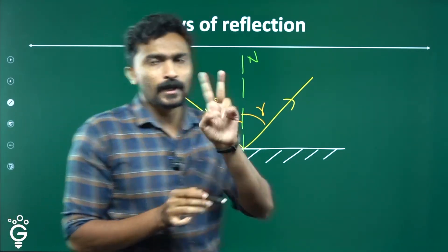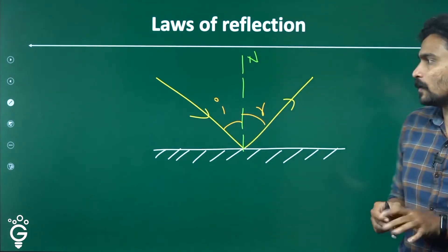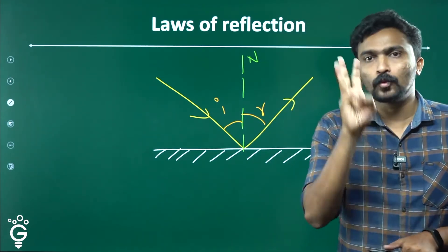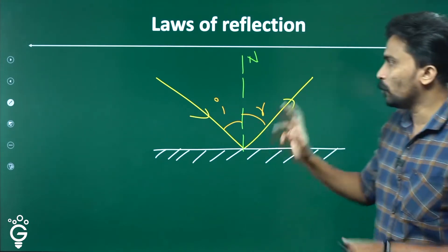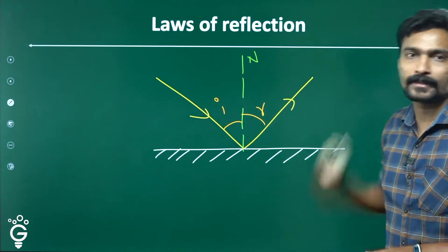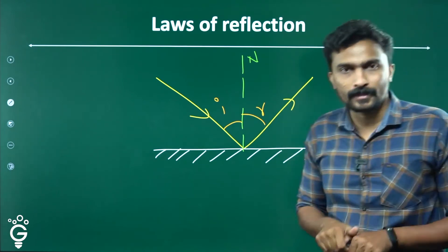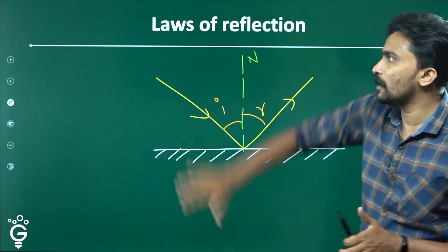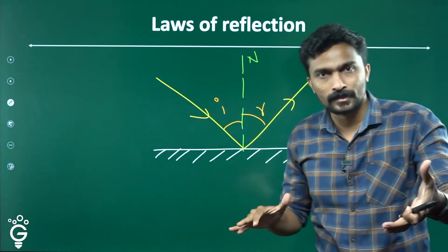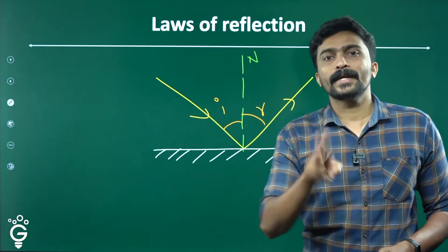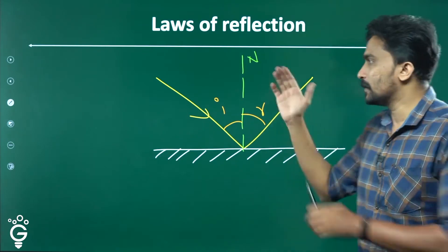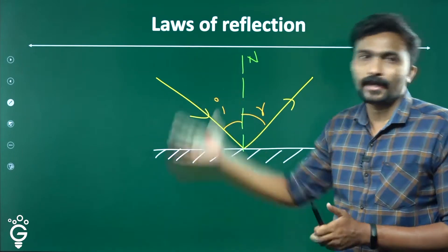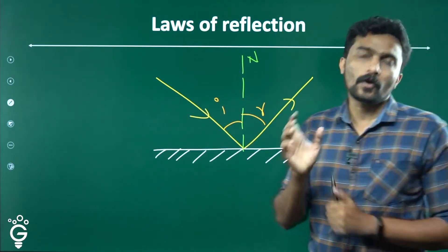The laws of reflection are very simple. We will discuss three lines and two angles. The three lines are: one incident ray, one normal, and one reflected ray. These three lines are in the same plane. You can see a plane on this screen — all three lines lie in the same plane. This is the first law of reflection.